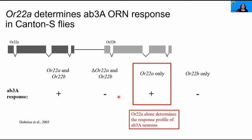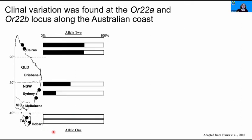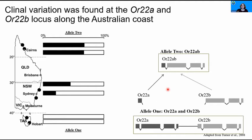This locus may show clinal differentiation along the Australian coast. In Australia, the north is tropical and warm, while the south is temperate and cool. There is 100% frequency of a long allele — containing both OR22A and OR22B — in the south, and about 70% frequency of a short allele in the north. This short allele is a chimeric receptor formed from a deletion between the first intron of OR22A and the first intron of OR22B, producing OR22AB: the first exon of OR22A fused with the remaining exons of OR22B.